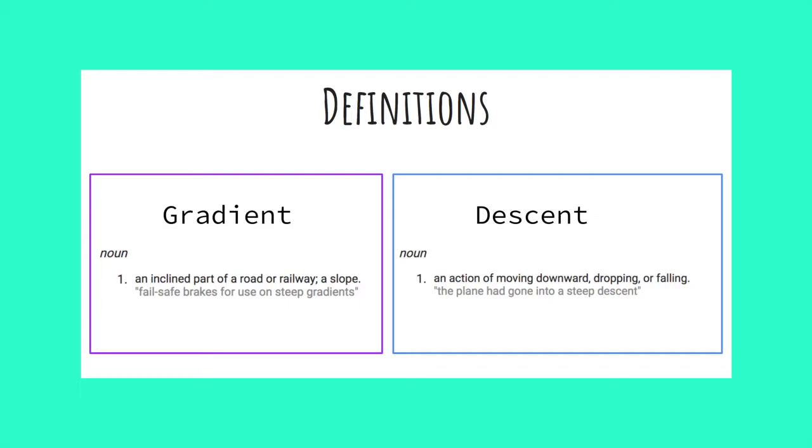A gradient is simply an incline, a slope. Descent means to move downward, so together gradient descent means moving down a slope. And the slope we're moving down in machine learning is our loss curve.